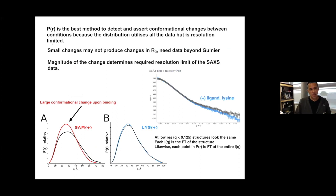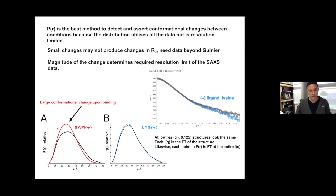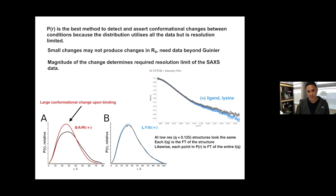The P(r) distribution is the best method to assess conformational changes. Small changes may not produce changes in the radius of gyration — the Guinier region may not be sensitive enough to detect them. Here we look at the SAM riboswitch in the presence and absence of S-adenosylmethionine: in the presence of SAM, a very small molecule about the size of ATP, there's a very large change in the P(r) distribution. In contrast, with the lysine riboswitch the conformational change is subtle and hard to assert confidently from the raw curves.